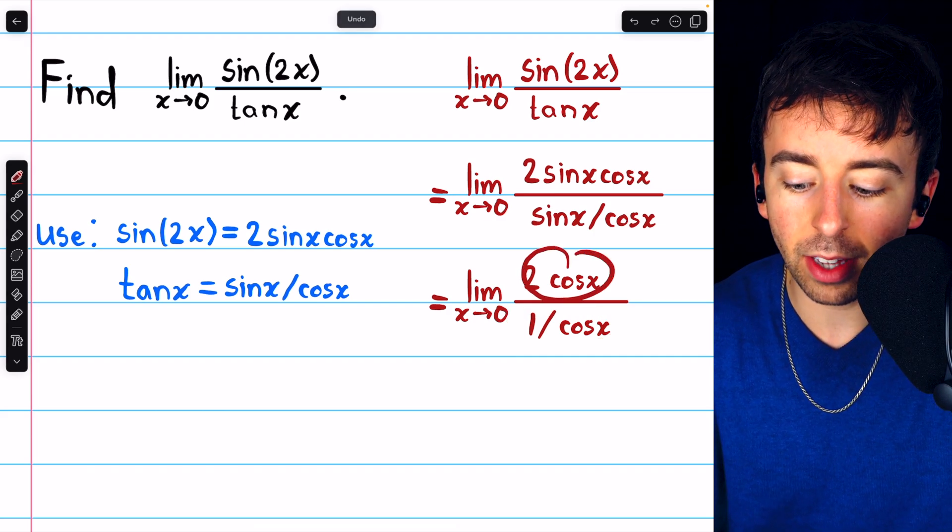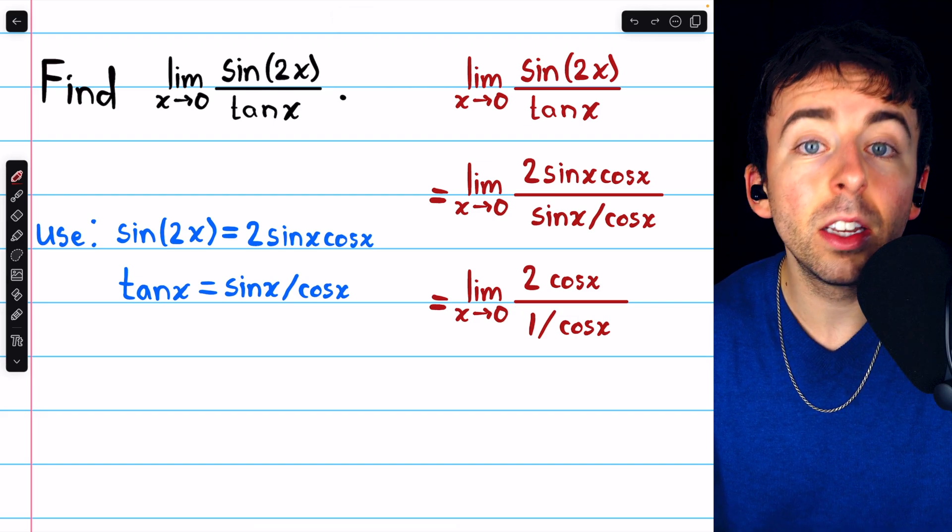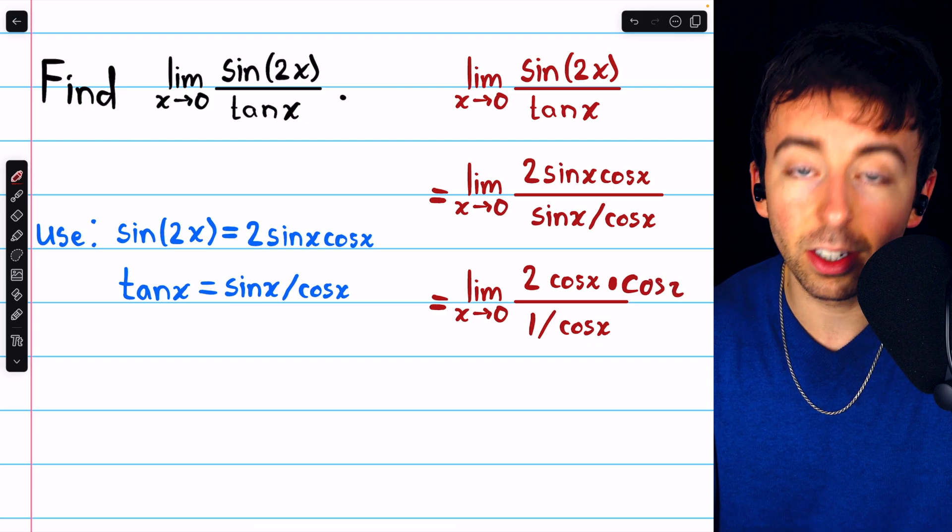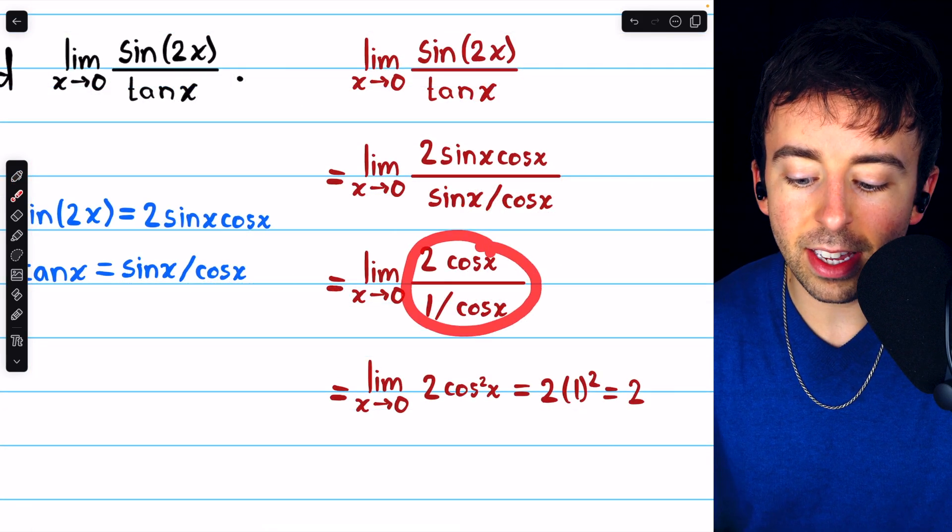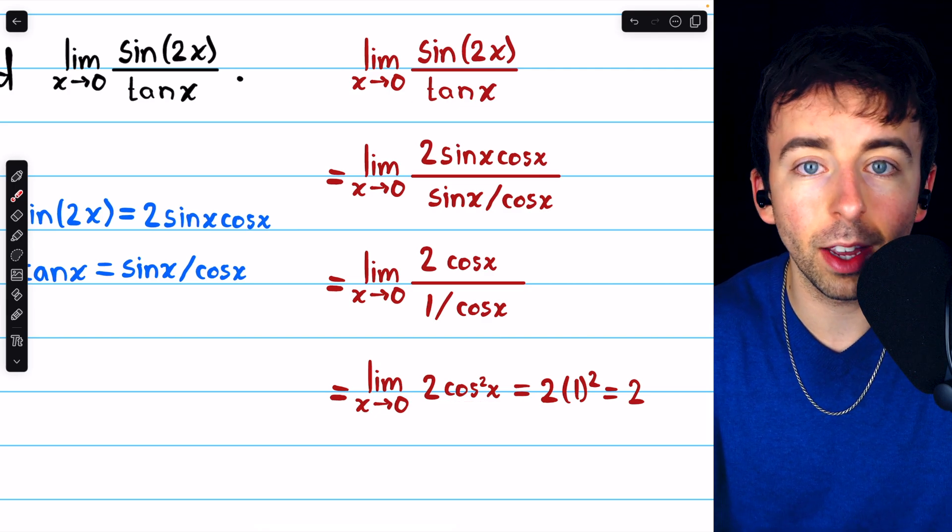So now we have 2 cosine x divided by 1 over cosine x. Dividing by 1 over cosine x is the same as multiplying by cosine x. And thus, this equals 2 times cosine x times cosine x, which is cosine squared x.